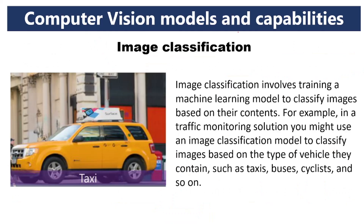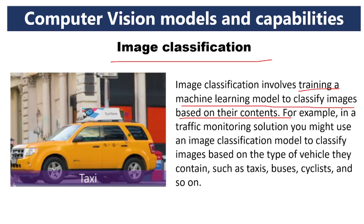The computer vision models and capabilities. First is image classification. Image classification means training a machine learning model to classify images based on their contents. The AI or machine learning model is trained to classify images based on the contents.